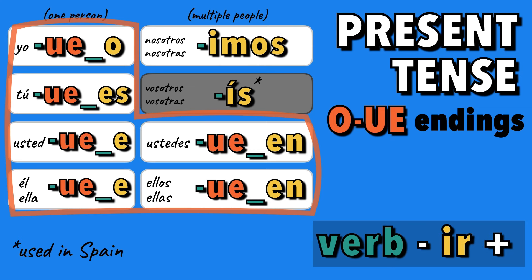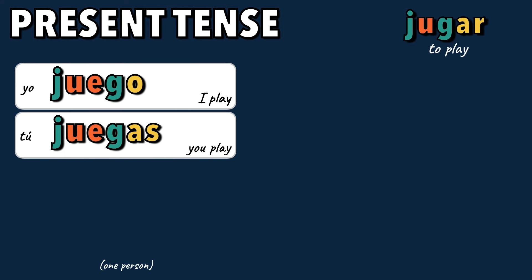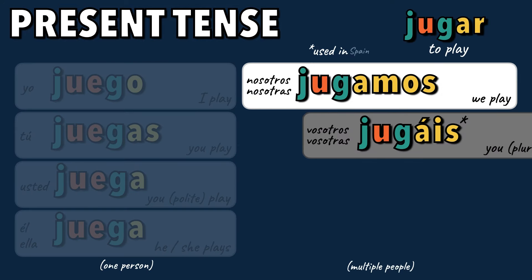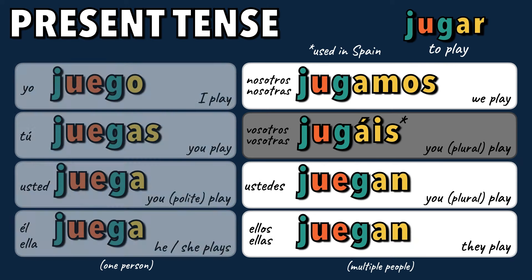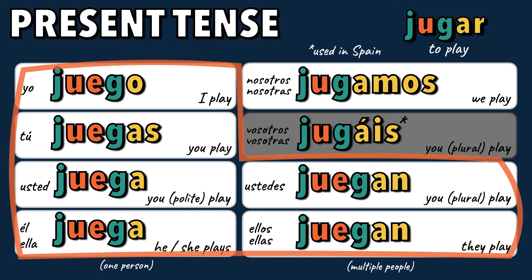Now, let's see how the verb jugar changes to say different people play. Juego, juegas, juega, jugamos, jugáis, juegan. Notice this verb actually doesn't have an O, but rather a U, and the U changes to UE in these forms. We'll include it with the O to UE verbs because it's the only verb that changes from U to UE.